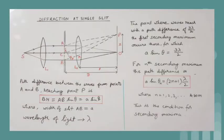For a point where the waves reach with a path difference of 3 lambda by 2, we can imagine the wave front AB to be divided into 3 equal parts, so that the path difference between waves from corresponding points in the first two parts being lambda by 2 results in destructive interference, and secondary waves from the third part produce the first secondary maximum.